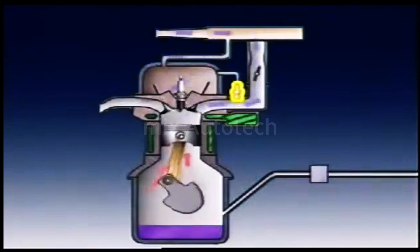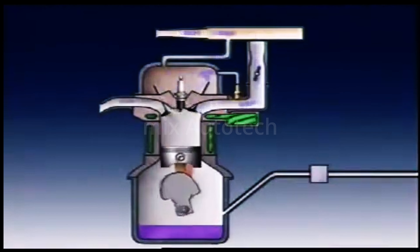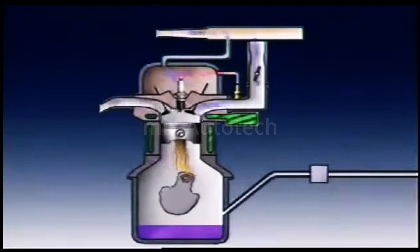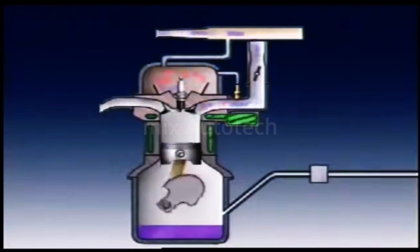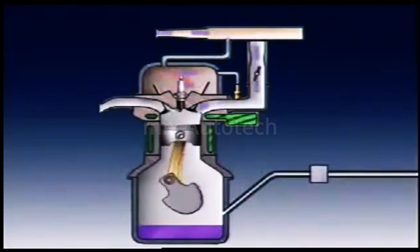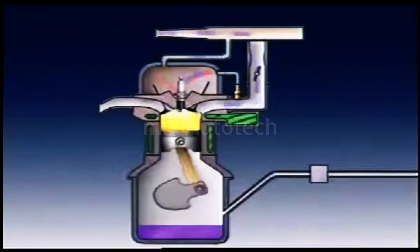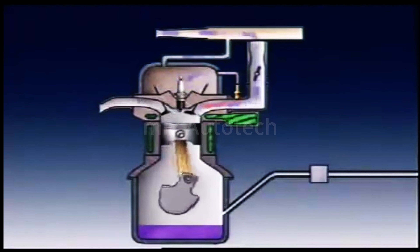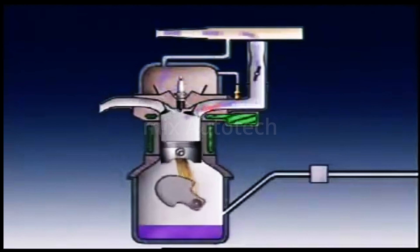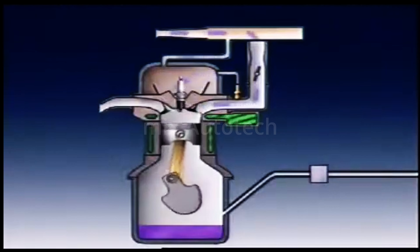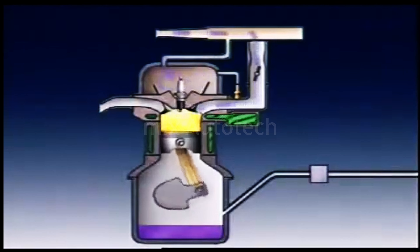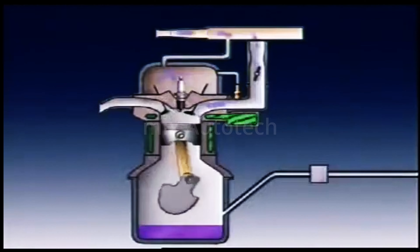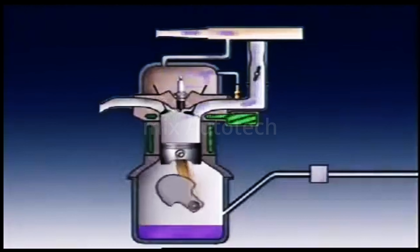When the engine starts, the positive crankcase ventilation system flushes vapors out of the crankcase and into the intake manifold, where they join with the inlet air-fuel mixture. Once in the inlet manifold, the vapors are drawn into the engine where combustion can convert them into carbon dioxide and water vapor.